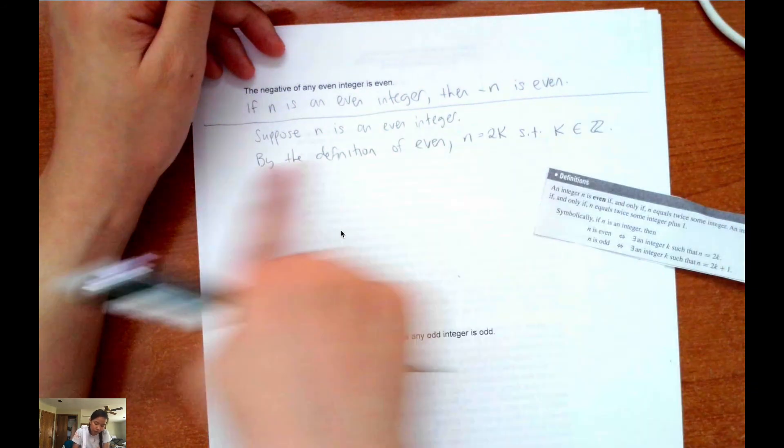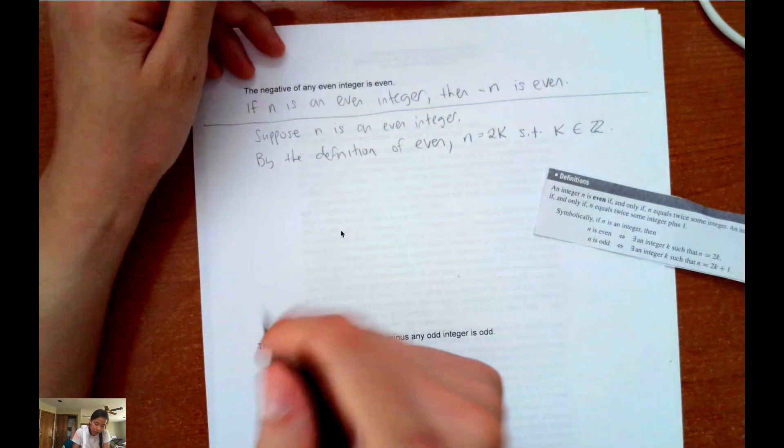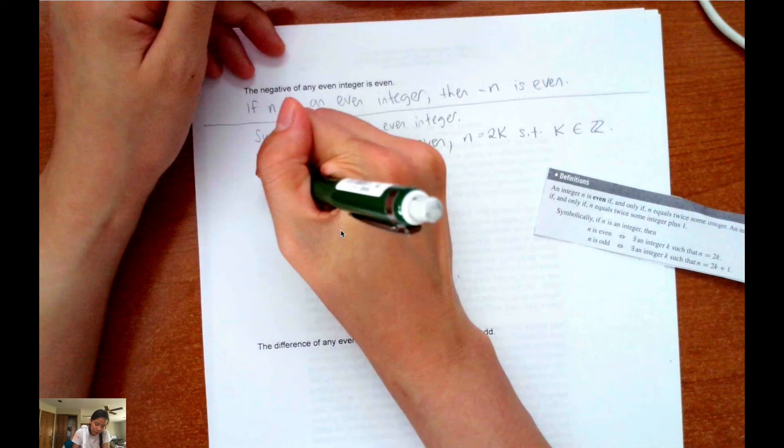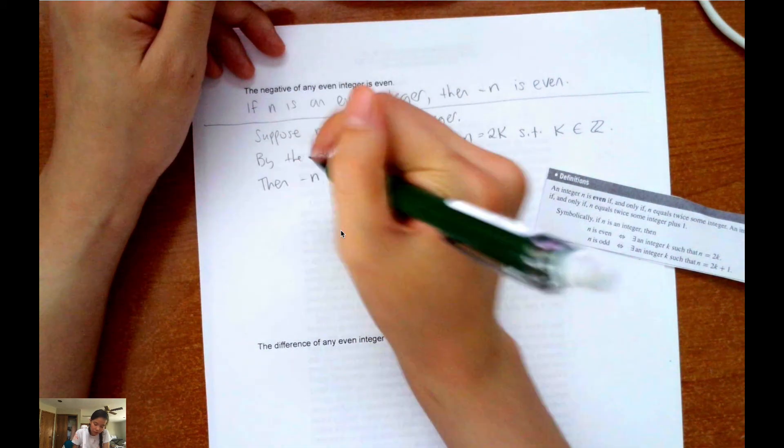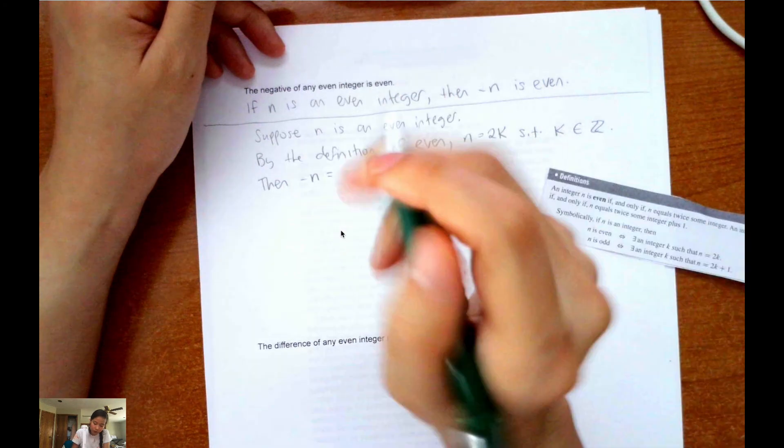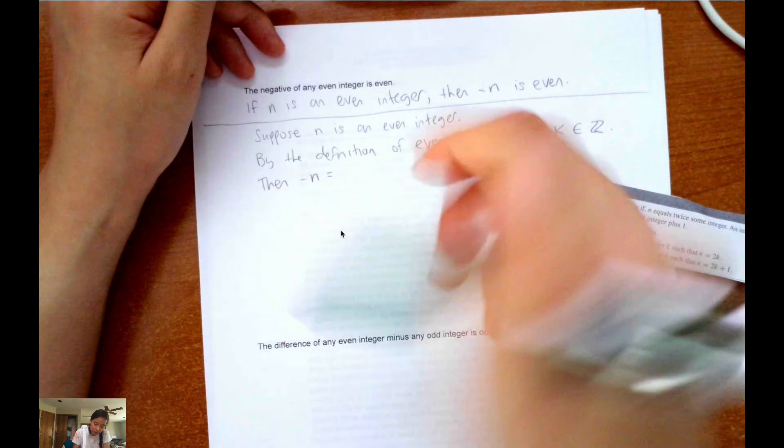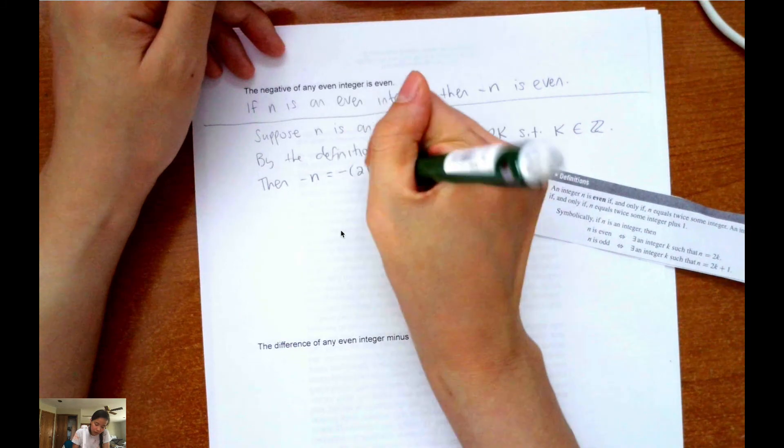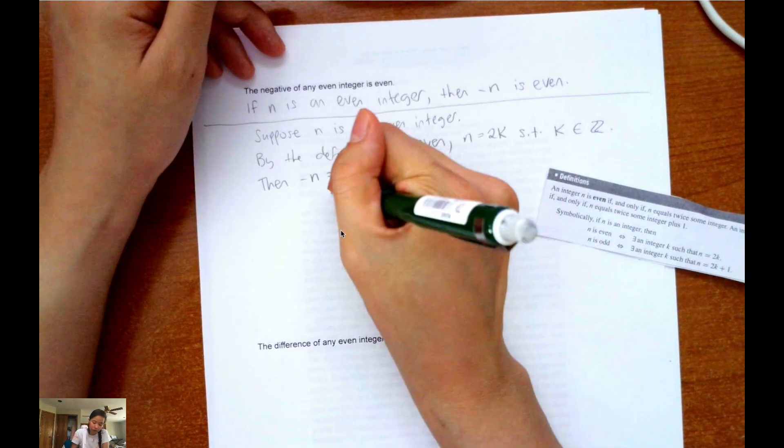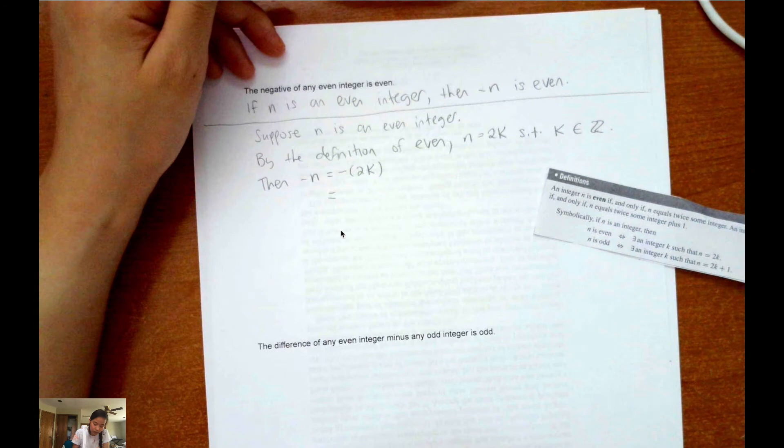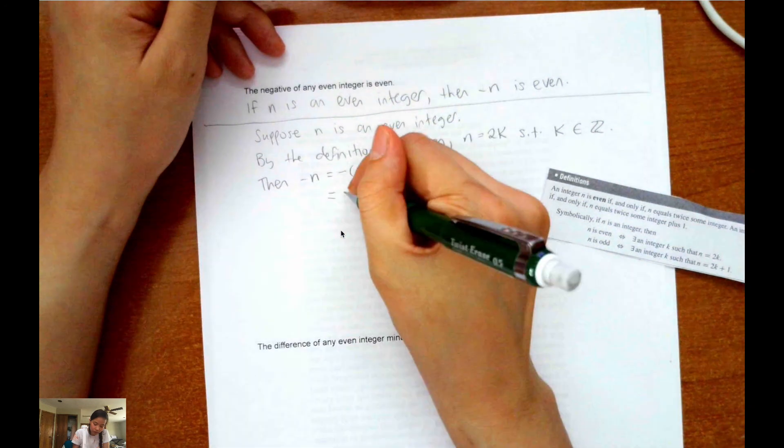So we could say then, negative n equals, well since n equals 2k, then negative n equals negative 2k. And if we rearrange the negative sign, we could say that equals 2 times negative k.